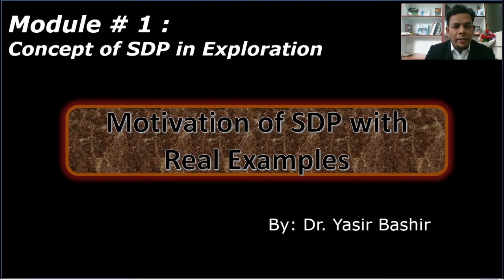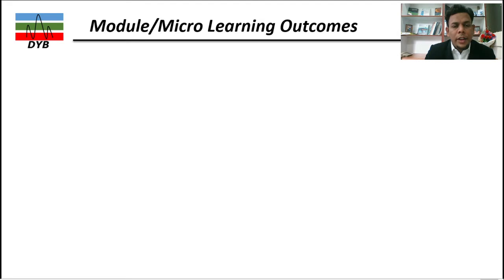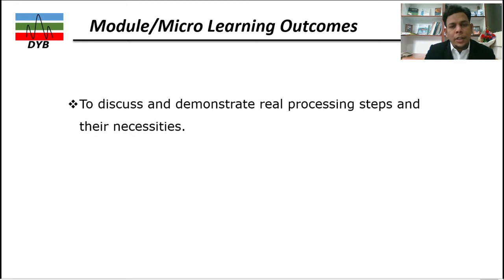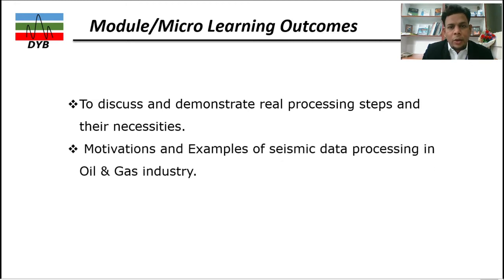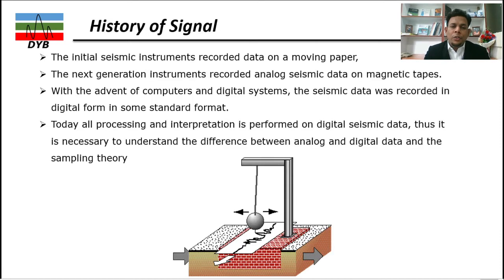The course learning outcomes for this module include two main objectives. The first is to discuss and demonstrate the real processing steps and their necessities — you need to evaluate whether each processing step is necessary or not. The second objective is to get motivation and examples of seismic data processing in the oil and gas industry.